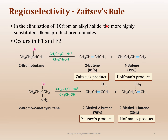Regioselectivity, which I've already introduced, is called Zaitsev's rule. Zaitsev's rule is that the more stable alkene is going to be the major product. In this case, both E1 and E2 have these considerations for Zaitsev's product. So regioselectivity is not only for E1 or E2 - it's for both.